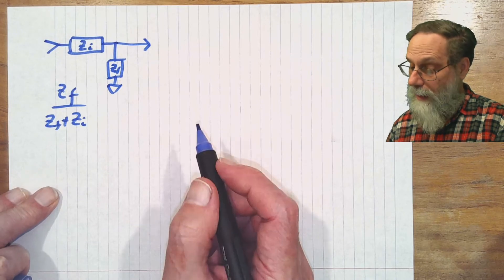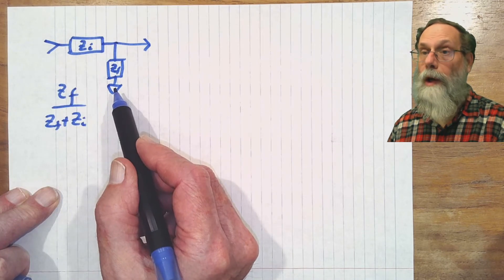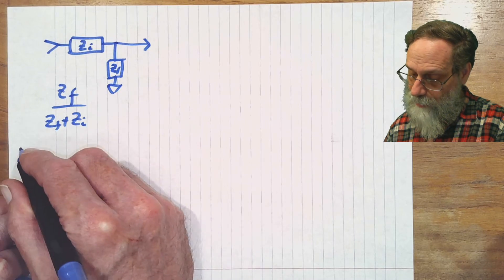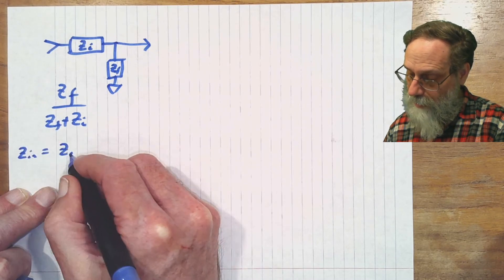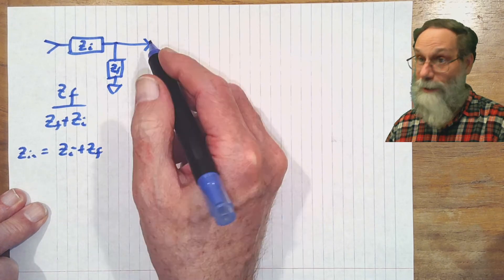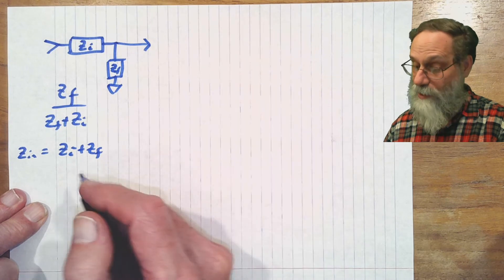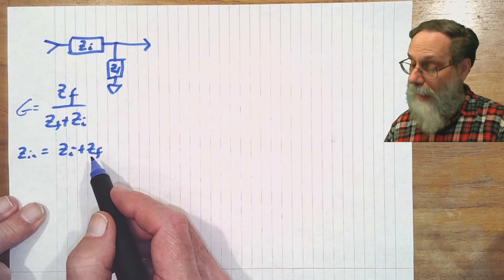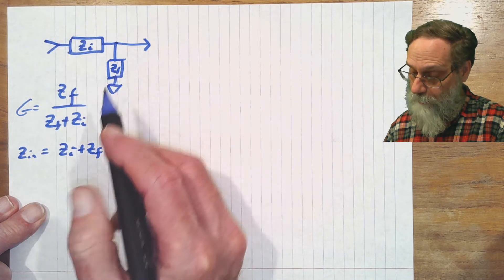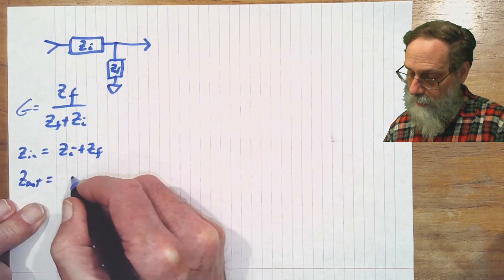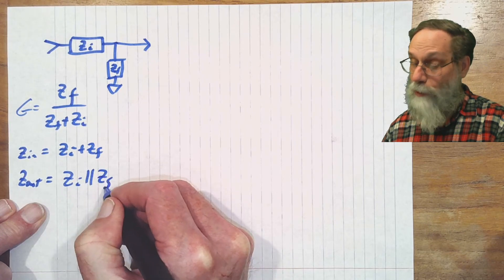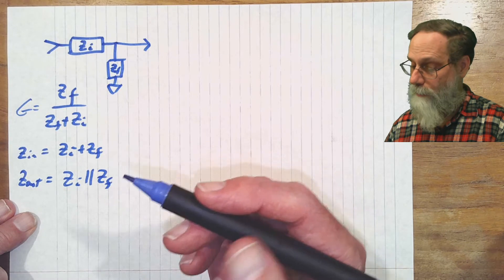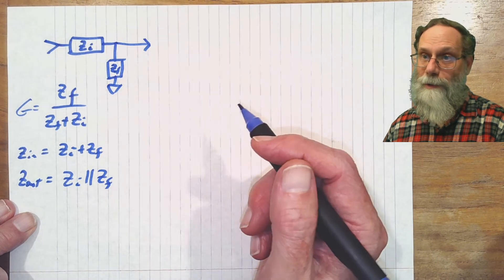If we look at what does the impedance look like from the input, assuming that we're not taking any current from the output, ZN is just ZI plus ZF. If there's a load out here, that changes everything. It changes not only the behavior of the circuit, what the gain is, but it also changes the input impedance. The output impedance of this, because it's a voltage divider, is ZI in parallel with ZF.